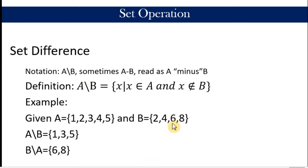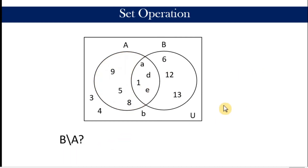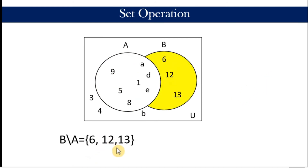Be reminded also that A minus B is not the same as B minus A. For B minus A, we work from B and remove all the elements of B that are elements of A. So we remove two and four because they are common. We do not have a six or an eight in A, so B minus A is the set containing six and eight. In our Venn diagram, A minus B is all of A less B, and B minus A is the other way around — the set containing six, twelve, and thirteen.